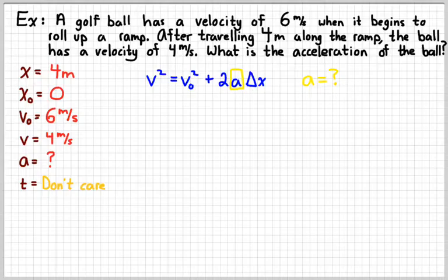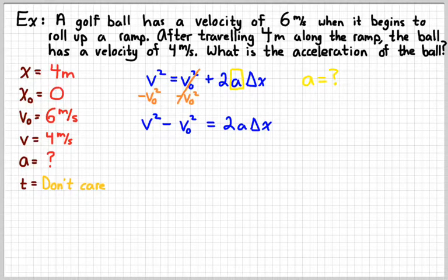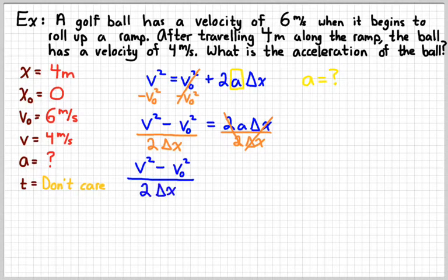So to solve this thing for A, I would undo the addition first. I would subtract the V naught squared from both sides. Cancel it out on the right. And so, now my equation will look like that. And then the next step. Divide both sides by 2 delta X. Undo the multiplication by division. Do the same thing to both sides. Cancel out on the right side. And so, now my equation looks like that. Then it's just a matter of substituting in my numbers with their units. And then evaluating.